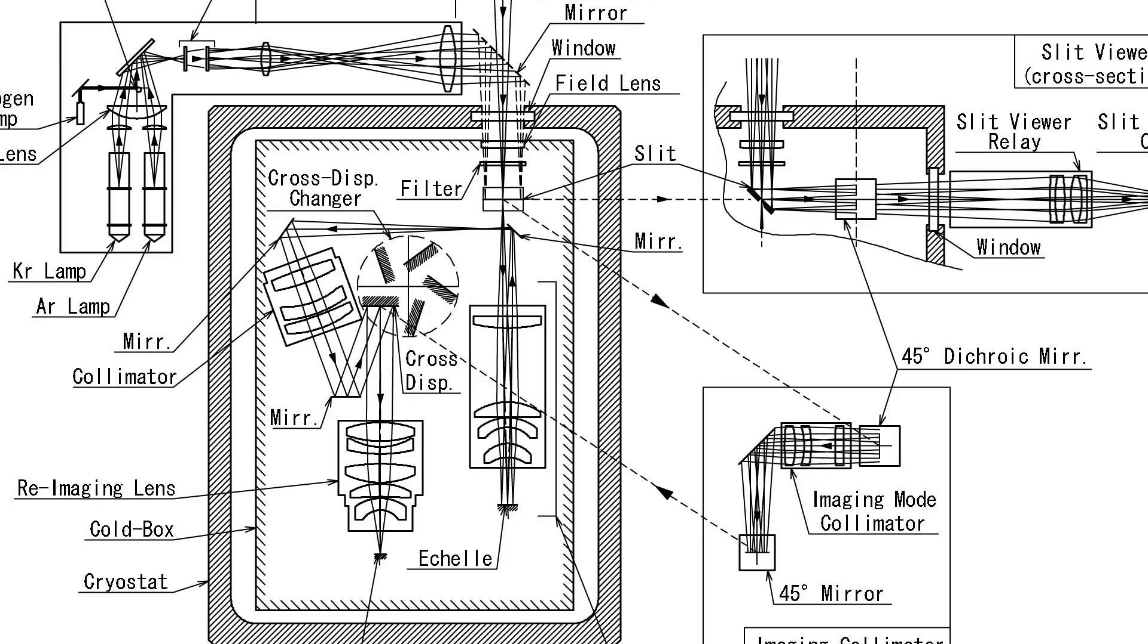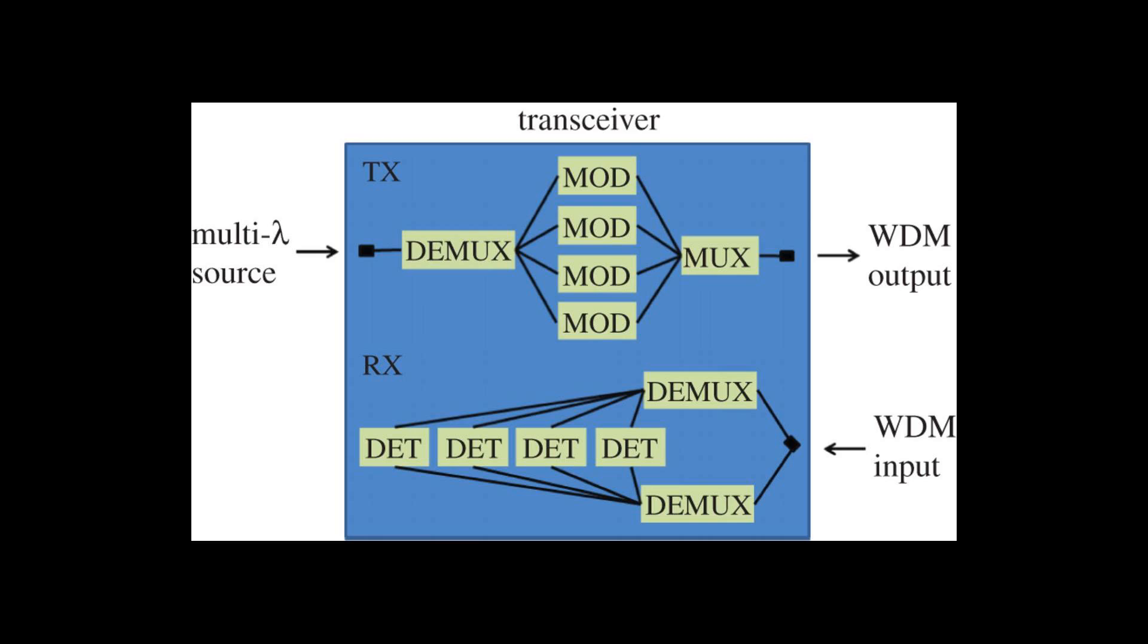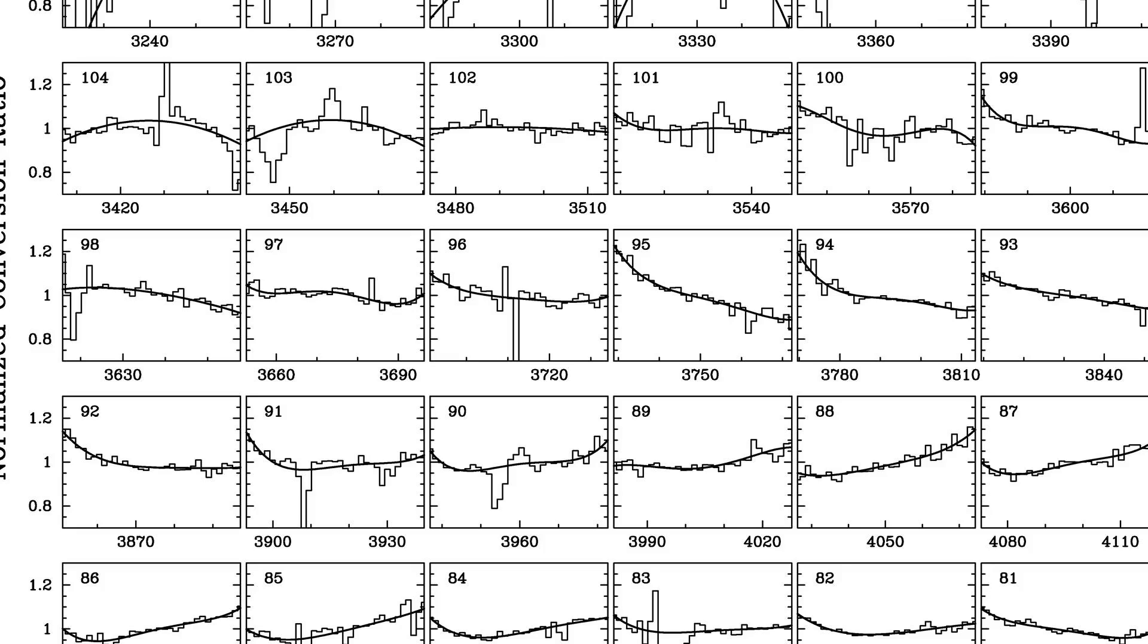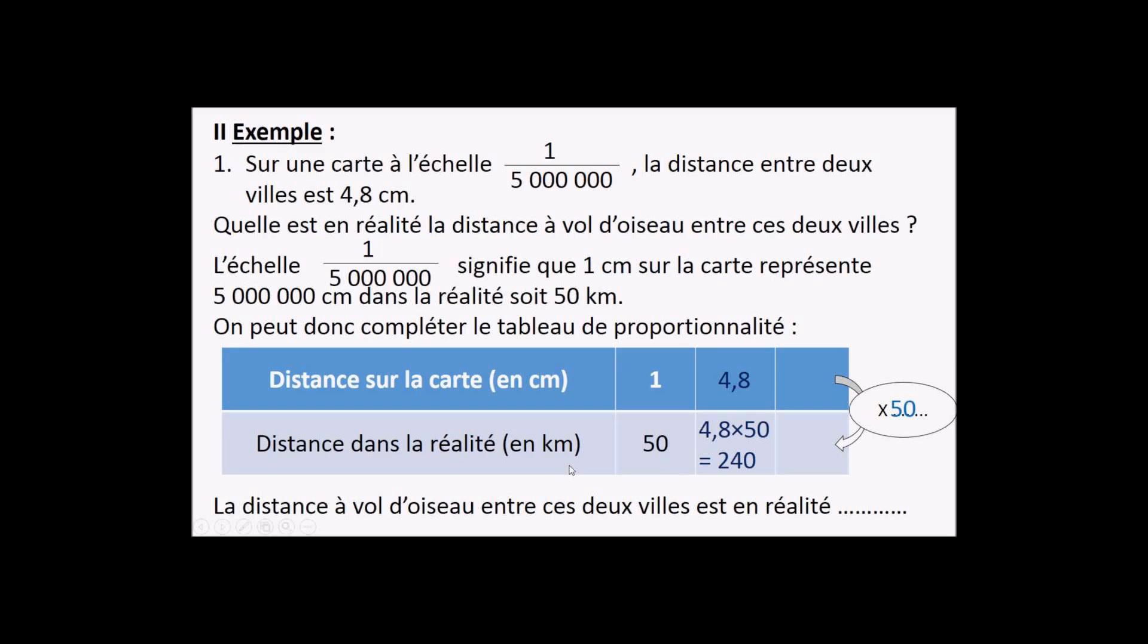See also: Diffraction Grating, Grism. Literature: Thomas Eversberg and Klaus Vollmann, Spectroscopic Instrumentation Fundamentals and Guidelines for Astronomers, Springer Heidelberg 2014, ISBN.